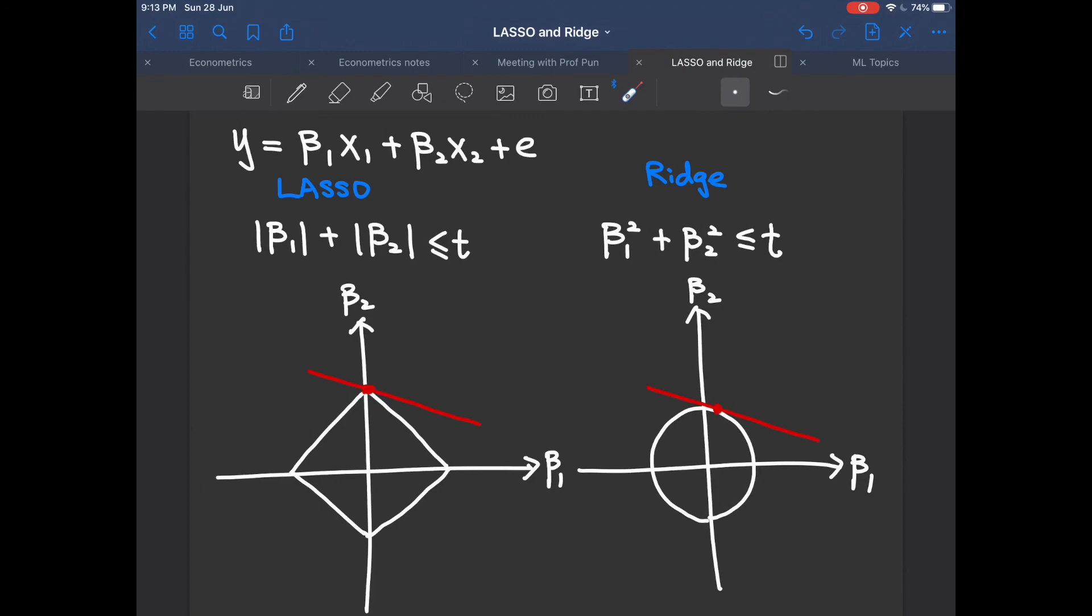On the other hand, since the edges of the Lasso's constraints nicely fall on the axis, there are much higher chances of the contour of function y minus x beta hat transpose multiply y minus x beta hat to hit on the Lasso's constraints when either beta 1 or beta 2 is 0.